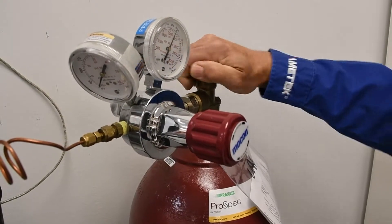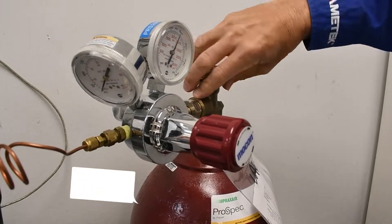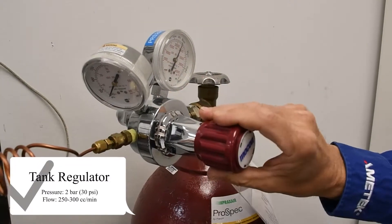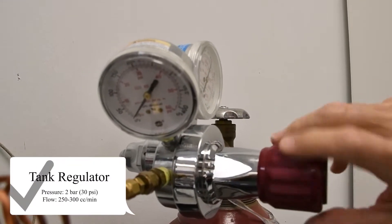Open the main tank valve and adjust the tank regulator to the following. Pressure, 2 bar or 30 psi. The flow, 250 to 300 cc's a minute.